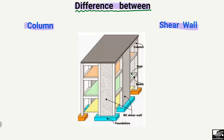First, let's define them with the help of a picture. Here we can see the RC shear wall — this is a reinforced concrete shear wall, which is a kind of wall made with reinforced concrete. We call it a shear wall because of some of its unique properties and characteristics. And here we can see the column — this one is a column, which is not a wall. Similarly, this one can also be a column.